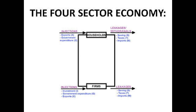Savings are a leakage — a withdrawal from the circular flow — because once money is being saved, it isn't being spent; it isn't part of income going round and round. Savings are income-induced: when incomes rise, people save more, but when incomes fall, people are spending all their money on essentials and have nothing left to save. That's why savings fall when incomes fall.